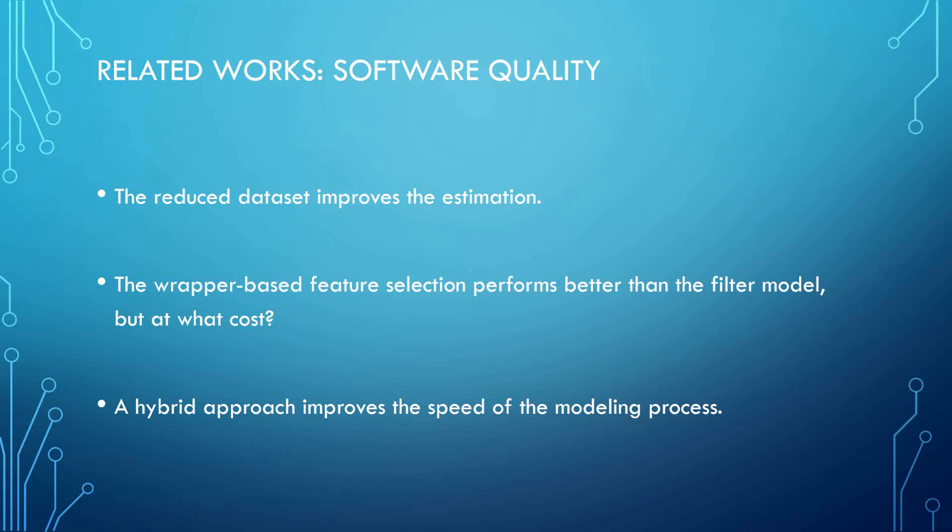All techniques were feature subset selection and not ranking techniques. The research concluded that the wrapper model was better than the filter model; however, it came at a high computational cost. Another paper from Professor Taggy's research team, titled 'Choosing Software Metrics for Defect Prediction: An Investigation on Feature Selection Techniques,' considered a hybrid approach using a filter-based ranking technique to first reduce the size of the feature space, and then a filter-based subset evaluation technique to choose the final feature set. They found that this hybrid approach greatly improved the speed of the modeling process while producing results similar to using the subset evaluation technique alone.